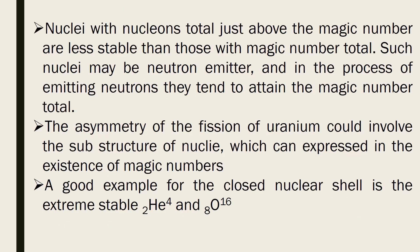Nuclei with nucleon numbers just above a magic number are less stable than those with the magic number. For example, if a nucleus has 21 neutrons — one more than the magic number 20 — it has a tendency to emit that extra neutron. In this neutron emission process, it tends to attain the magic number. The asymmetry of uranium fission also shows that daughter elements formed correspond to magic numbers.